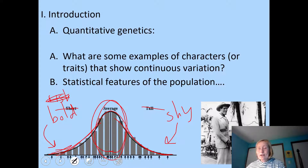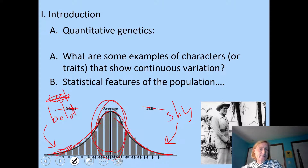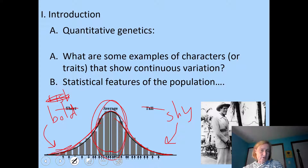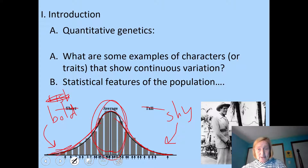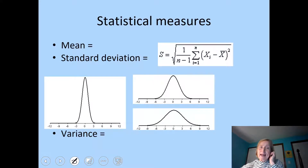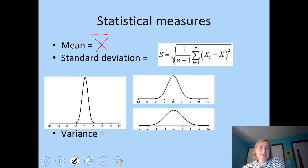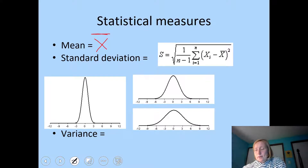When we look at traits that vary continuously, we want to think about the statistical features of the population. If we're thinking about height, we could calculate the average height in a population. The average — sometimes written as X-bar — is calculated by adding up all the samples and dividing by the sample size to get the mean. We could also look at the standard deviation or the variance. Both are measures of how spread out our data are, or a measure of the dispersion of a set of data points from the mean.